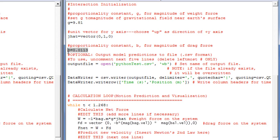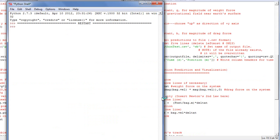In the code, here, we can see that the proportionality constant b is set to this value, the drag force equation is here, and now the net force is the sum from the weight force and the drag force, whereas previously it was just the weight force. Now, let's run the code.